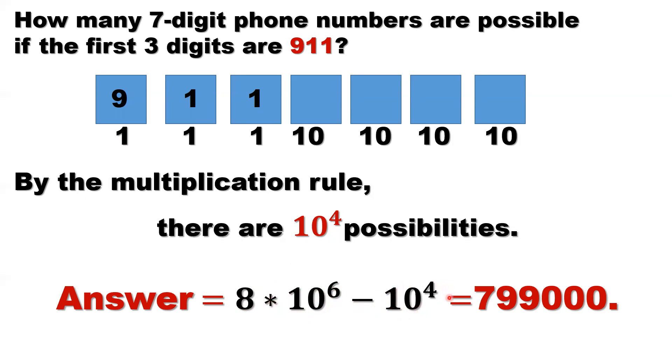So this is the total 9-1-1 numbers. So the difference should be the answer we need. That's 799,000. That's all.